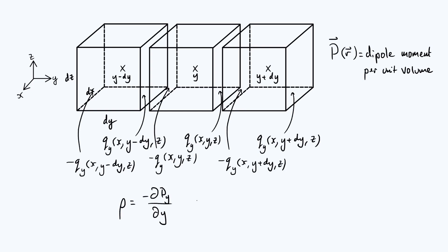When we add all of those charges together to find the total charge on all six faces of that middle cube and divide by the volume, you're going to get symmetrical contributions from each direction. Of course we're going to have minus ∂P_x/∂x and then minus ∂P_z/∂z. In vector calculus notation we can write this very compactly as minus the divergence of P.